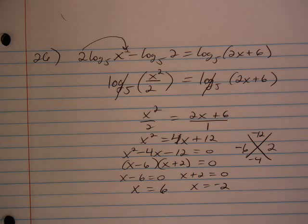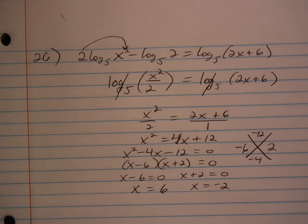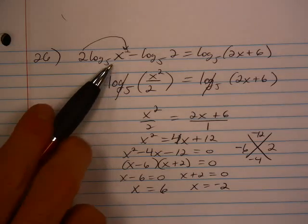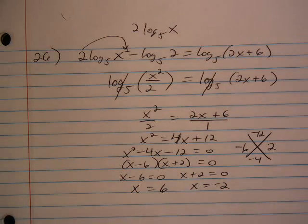Now the only thing is we want to make sure that both of these are proper solutions. They're not extraneous. Very back in the beginning, before this was squared, this was log base 5 of x. Then you have the 2 in front.